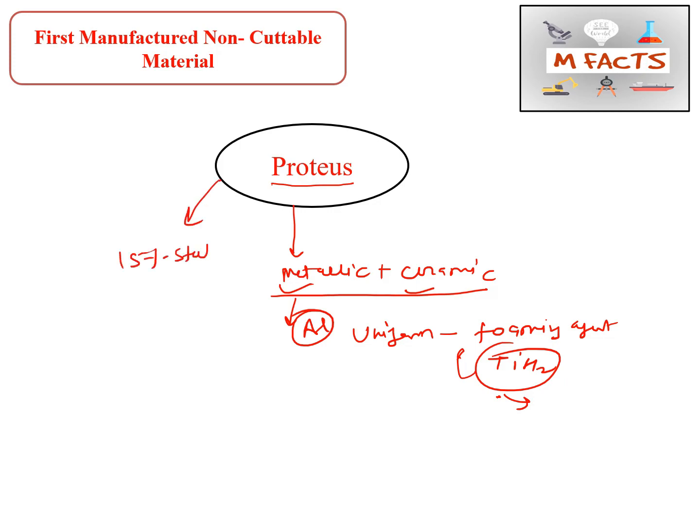This Proteus material is only 15% of steel density, so you can have an idea of how lightweight this material is. The other thing is that this is a non-cuttable material. Many tests have been applied on this material and it has been shown that this is a non-cuttable material which was first manufactured.